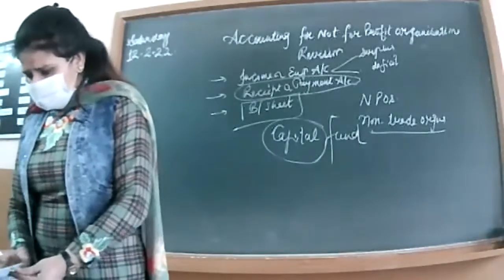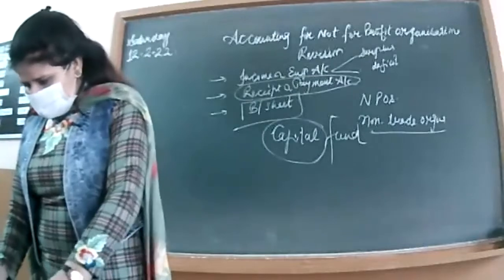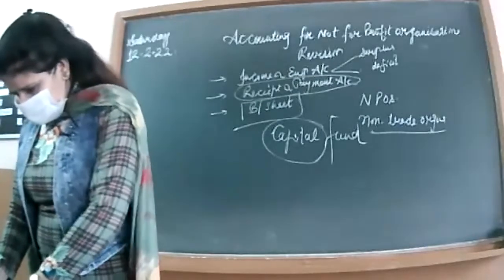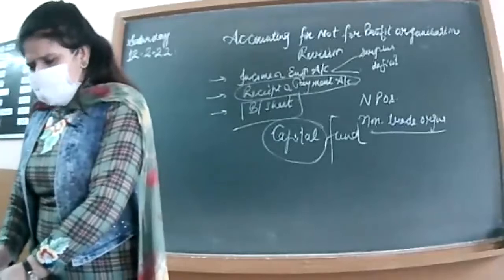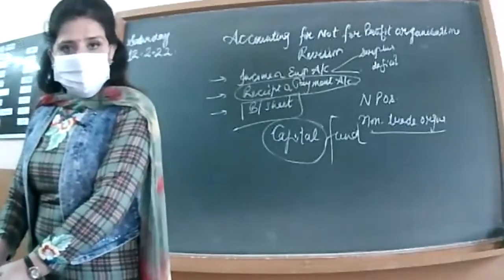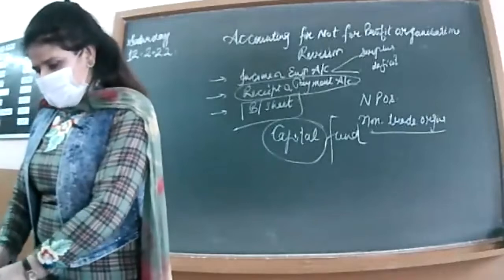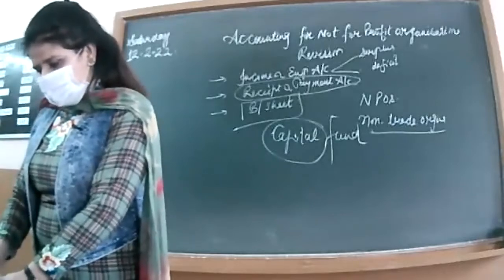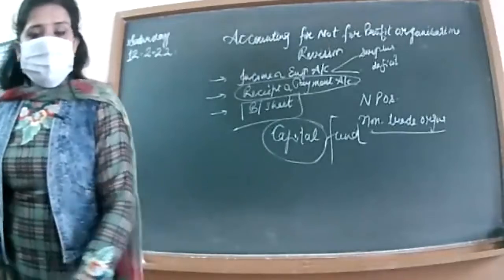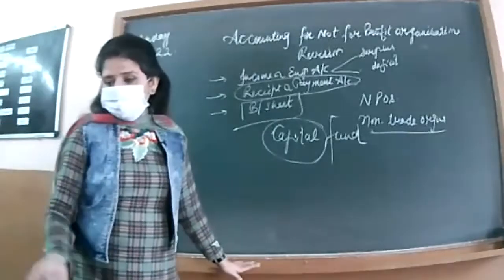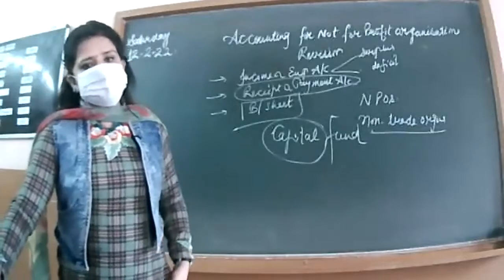Now let's see how the book has proceeded. First, the meaning of NPO is given. Then the NPO's main sources of income: you can get a donation, a charity, a subscription — which can be monthly, half-yearly, or annually — or a loan from financial institutions or banks. The theory portion is also important in this chapter, so the book talks about features of NPOs.